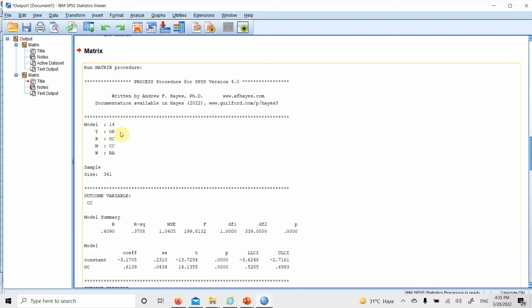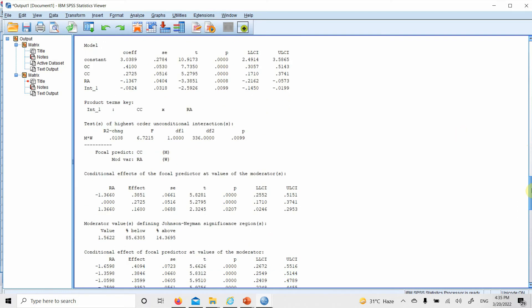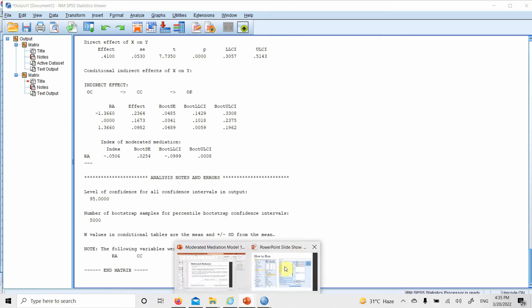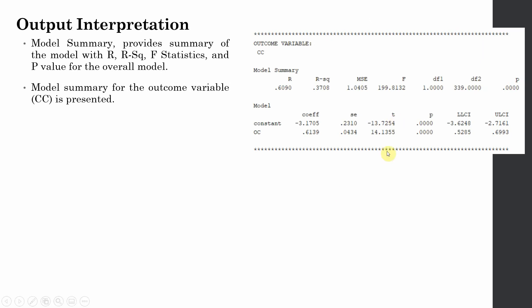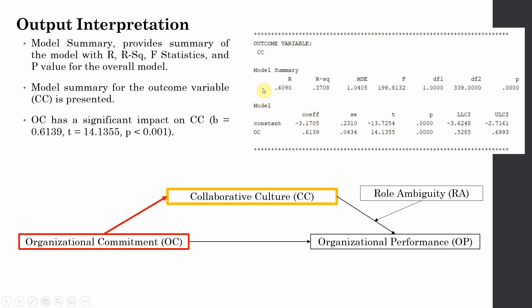Here are your results. The first thing is your summary output for the endogenous variable collaborative culture, which is affected by organizational commitment. It is significant because the p-value for organizational commitment is less than 0.05 and there is no zero between the lower and upper confidence interval bounds. Organizational commitment has a significant impact on collaborative culture.